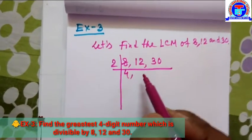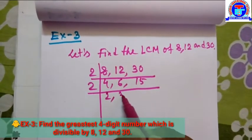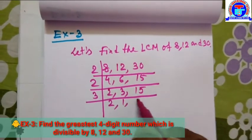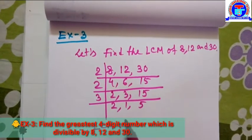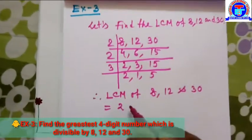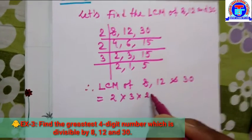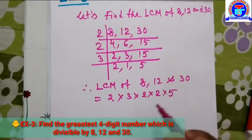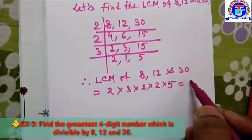First we take 2: this gives 4, 6, and 13. Again we take 2: this gives 2, 3, and 13. Then we take 3: this gives 2, 1, and 13. Therefore, LCM of 8, 12, and 13 is equal to 2 into 2 into 2 into 3 into 13, which equals 120.